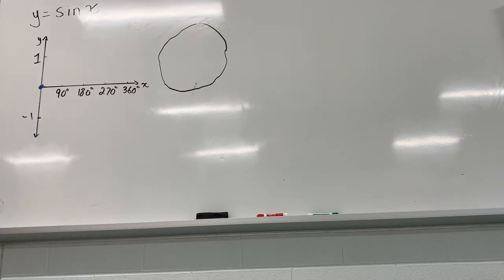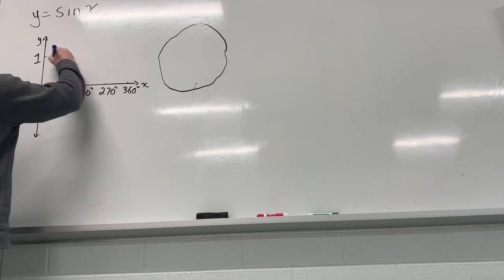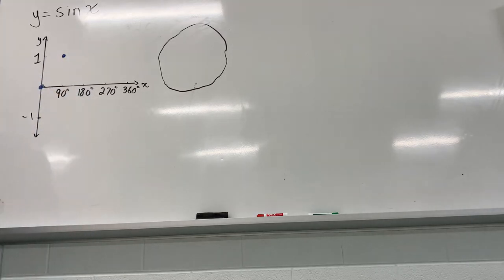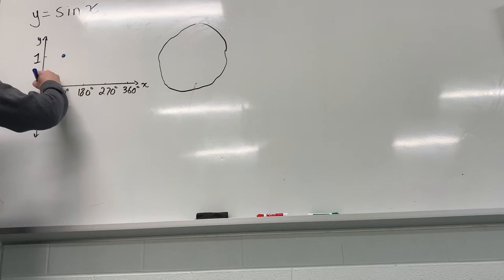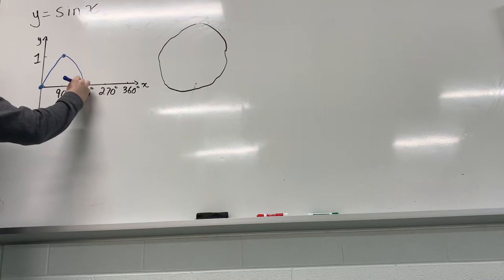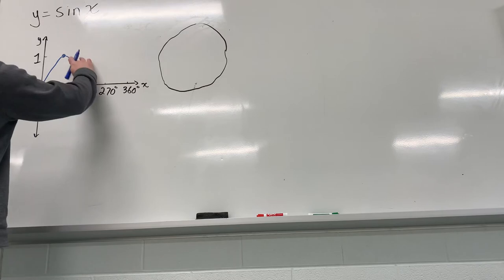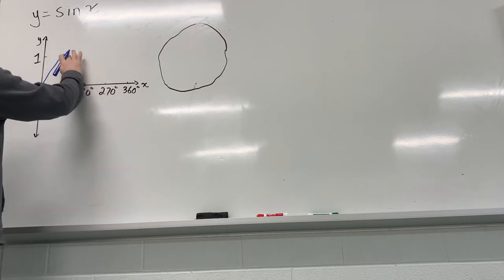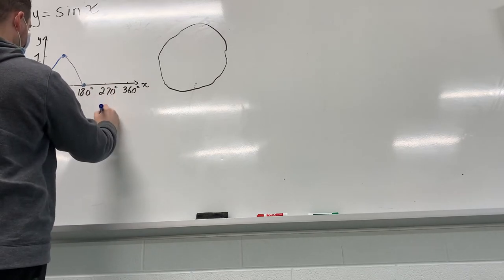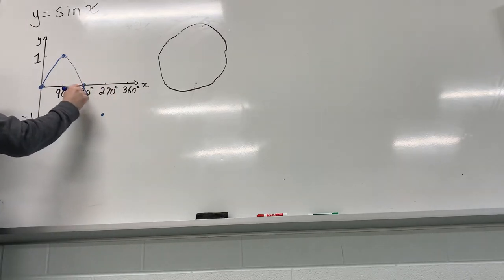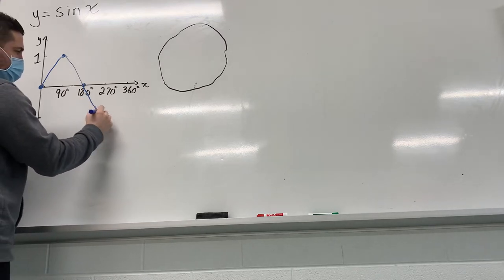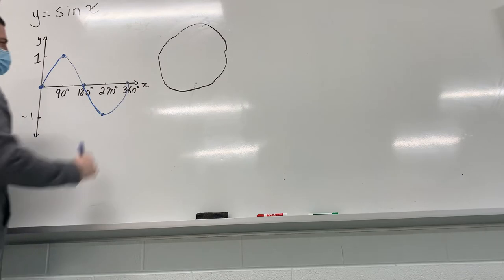Okay, so sine starts at 0, 0. Then it goes upwards to 90 and 1. Then after it hits 1, it starts coming down. It comes back down to the equation of the axis, which we'll talk about in a second, or the x-axis, then it goes below, below 0 to negative 1, and then back up to the x-axis at 360 degrees.